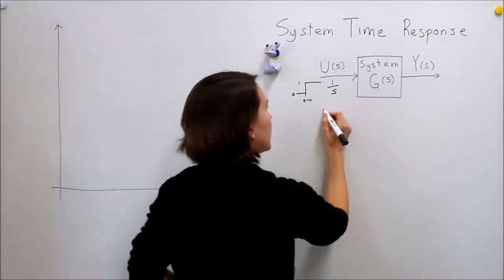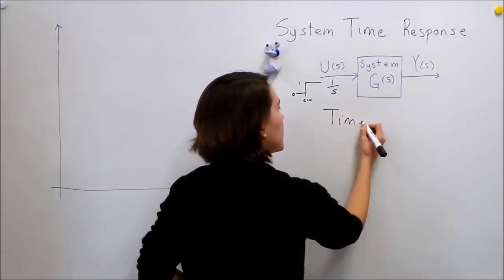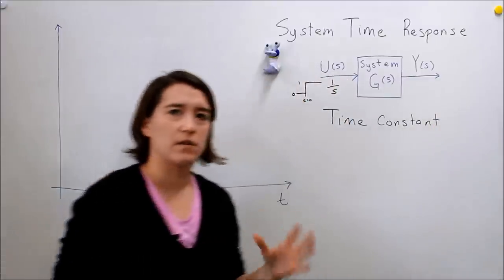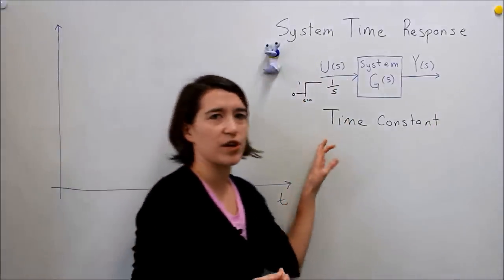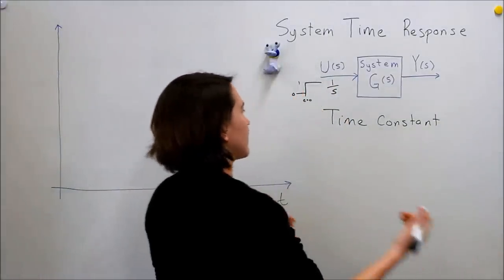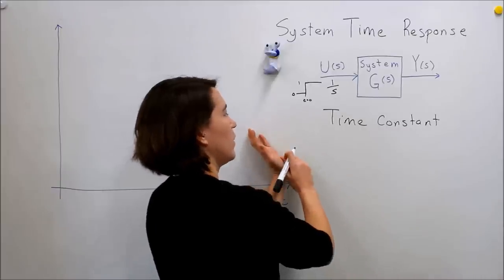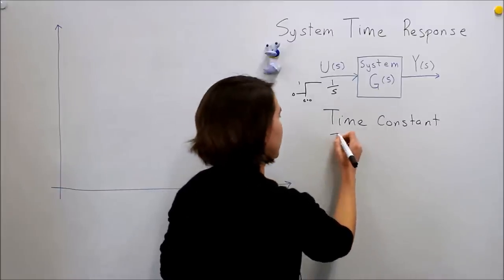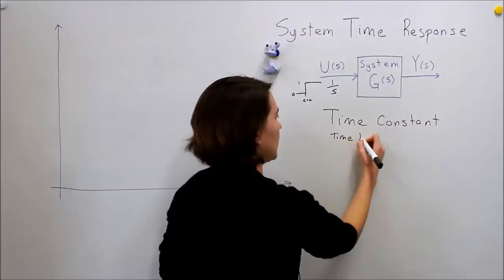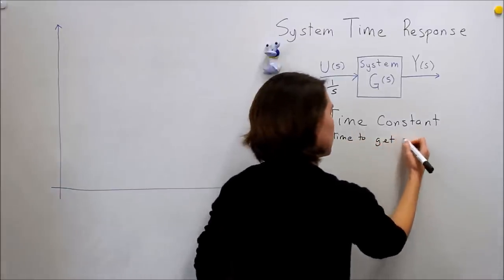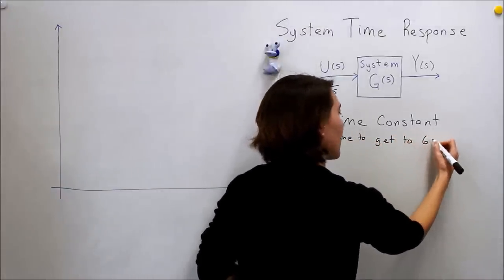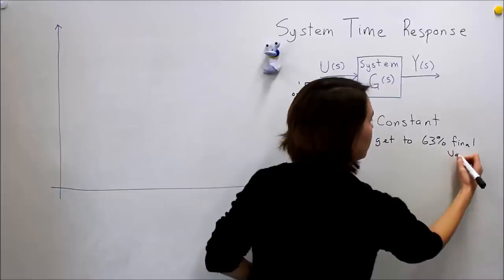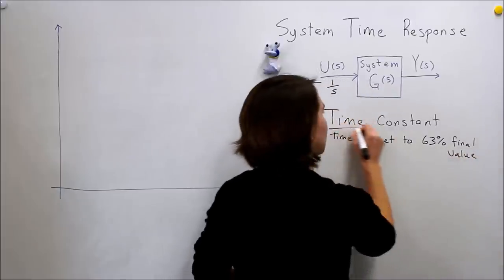We'll start out with time constant. You may be familiar with this from other electronic circuits courses. Essentially, if we're going from zero to some step, it's how long it takes the system, the time to get to about 63% of final value. So that's our time constant.